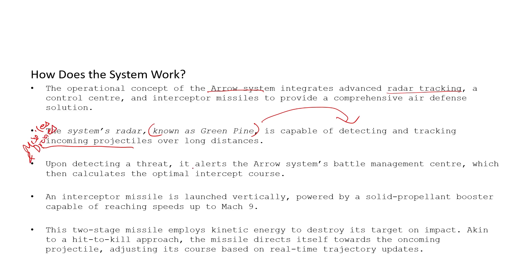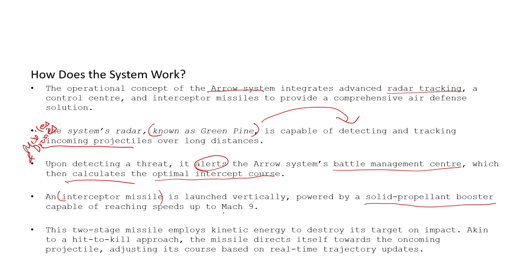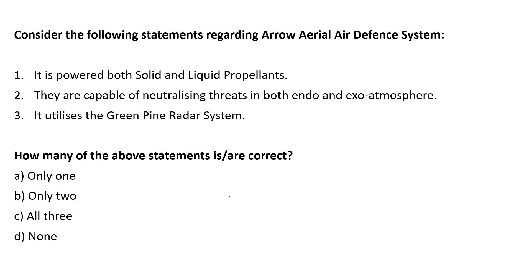Upon detecting the threat, the radar alerts the Aero battle management center. It also calculates at which point of time the interception has to be done. Once this calculation is done, through a solid propellant booster, the interceptor missiles are released at great speed — up to Mach 9.